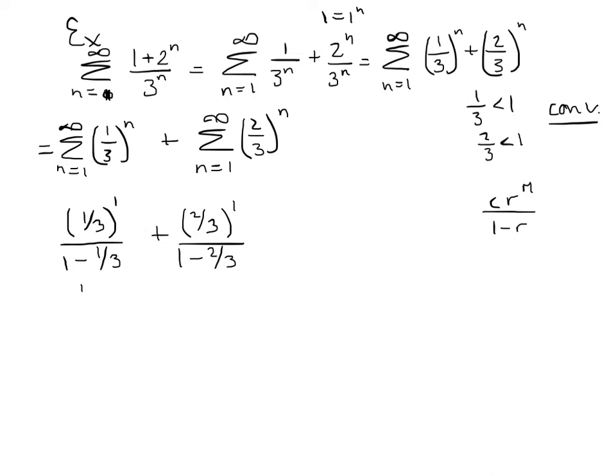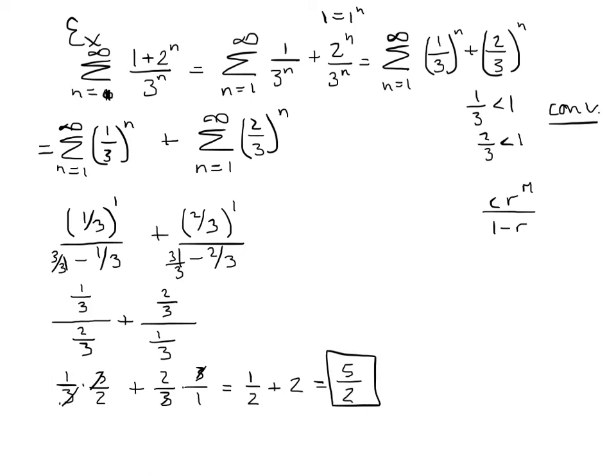So in this first one, I've got 1 third divided by 3 thirds minus 1 third would be 2 thirds, plus 2 thirds divided by 3 thirds minus 2 thirds is 1 third. And for this first one, if I flip and multiply, I'd have 1 third times 3 halves. And in the second one, I've got to flip the denominator and multiply by it. So 3's cancel there, 3's cancel there. I end up with 1 half plus 2, so that'll be 5 halves. So 5 halves will be my sum for the entire series. And I just wanted to show you what would happen if you had a geometric series that was broken up into 2 pieces.